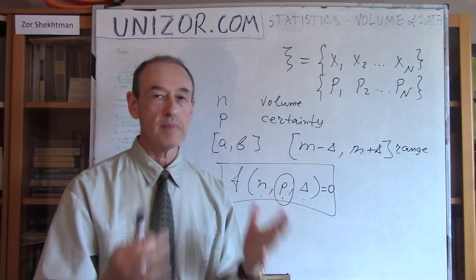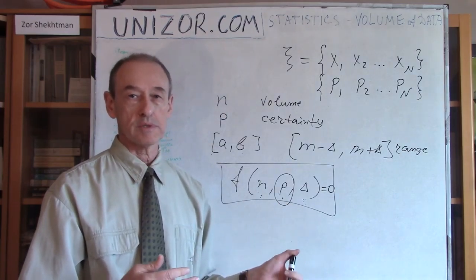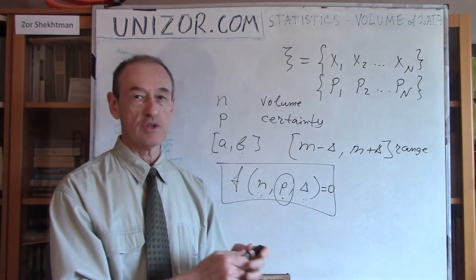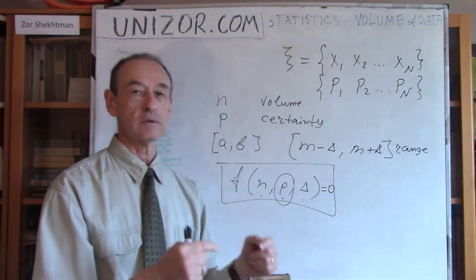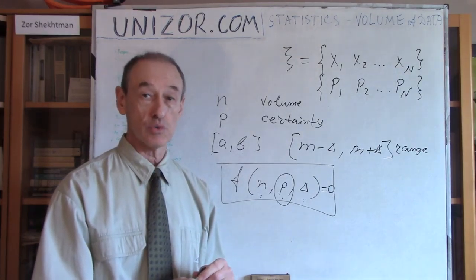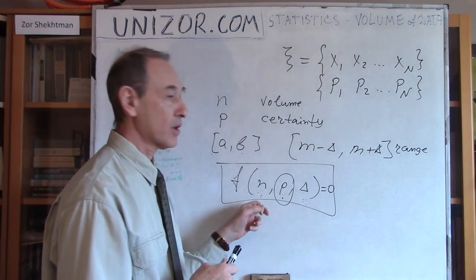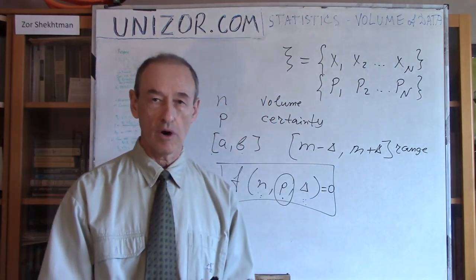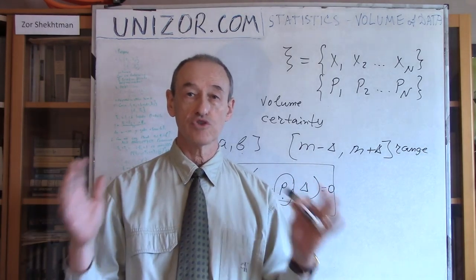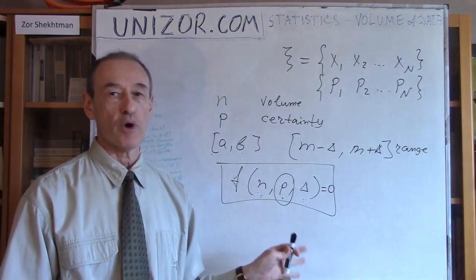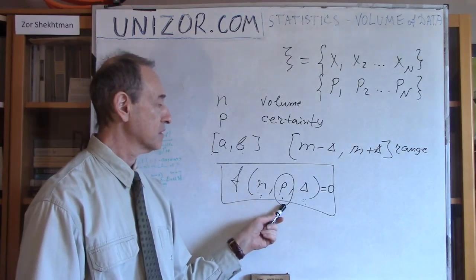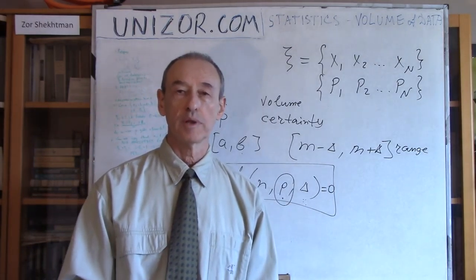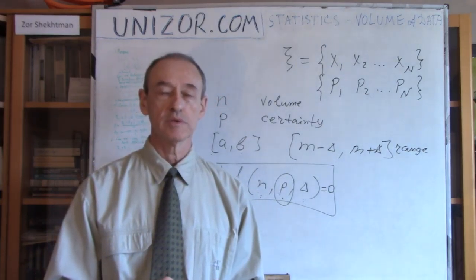Mathematical statistics actually solves these three major problems. What mathematical statistics can achieve is the following: a certain parameter is within a certain range with a certain level of certainty, expressed as probability of truth, and the number of experiments is involved in all these things. There are three more concrete purposes: knowing n and p to define delta; knowing n and delta to define p; and knowing p and delta to define n. One of these three problems is supposed to be solved when you deal with mathematical statistics.